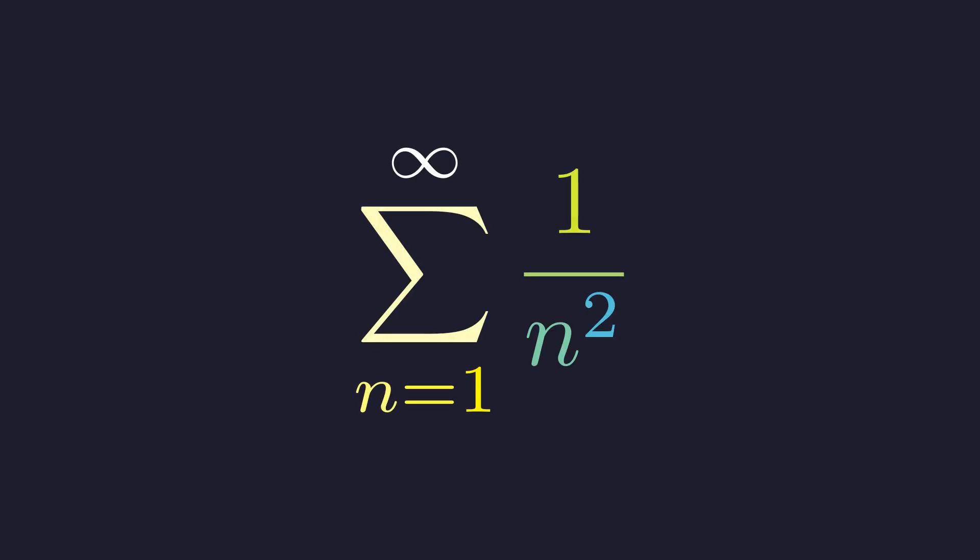Welcome back to Mental Math. This is the Basel problem. What's the sum of 1 over 1 squared, plus 1 over 2 squared, plus 1 over 3 squared, and so on forever?